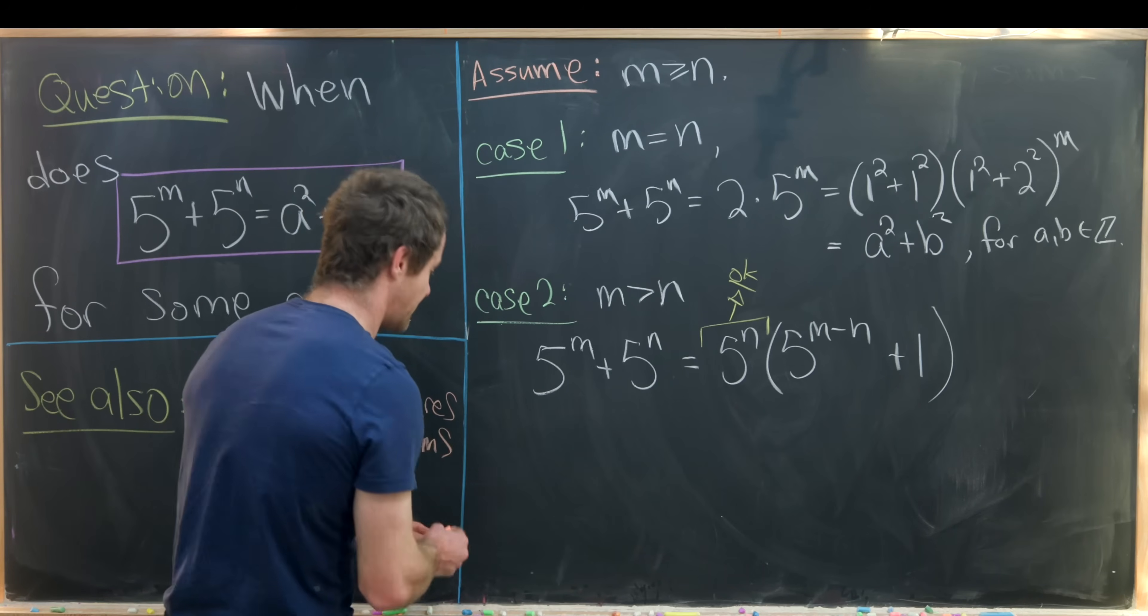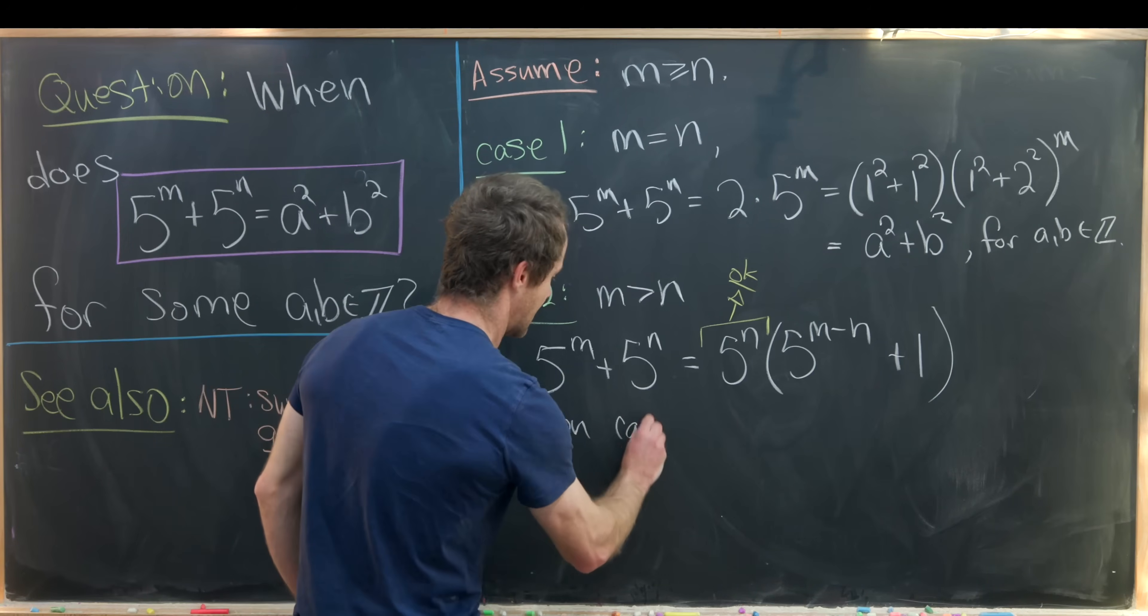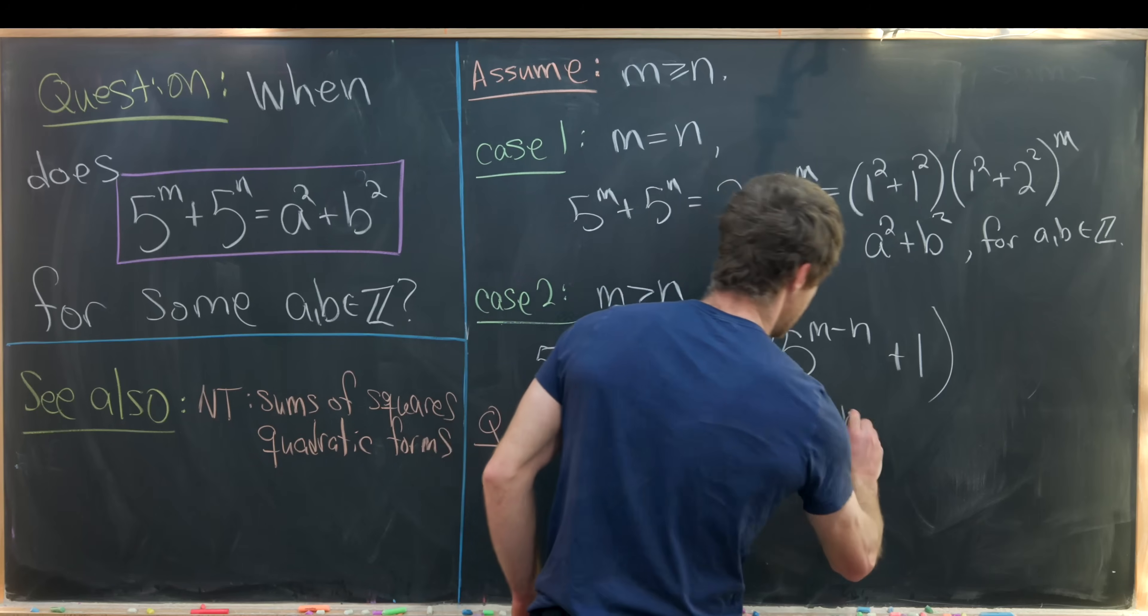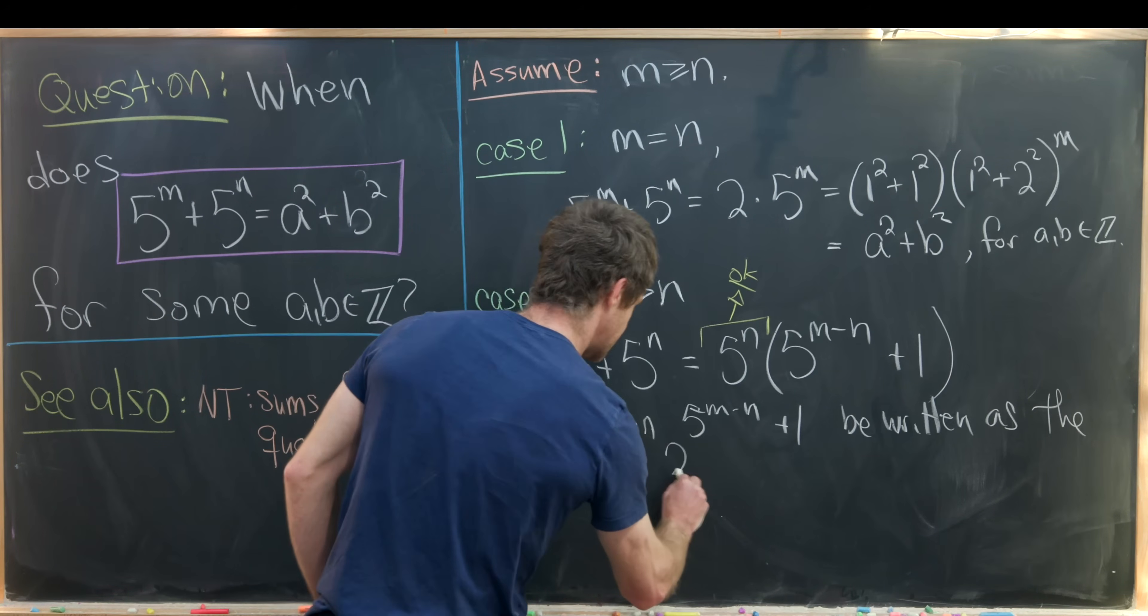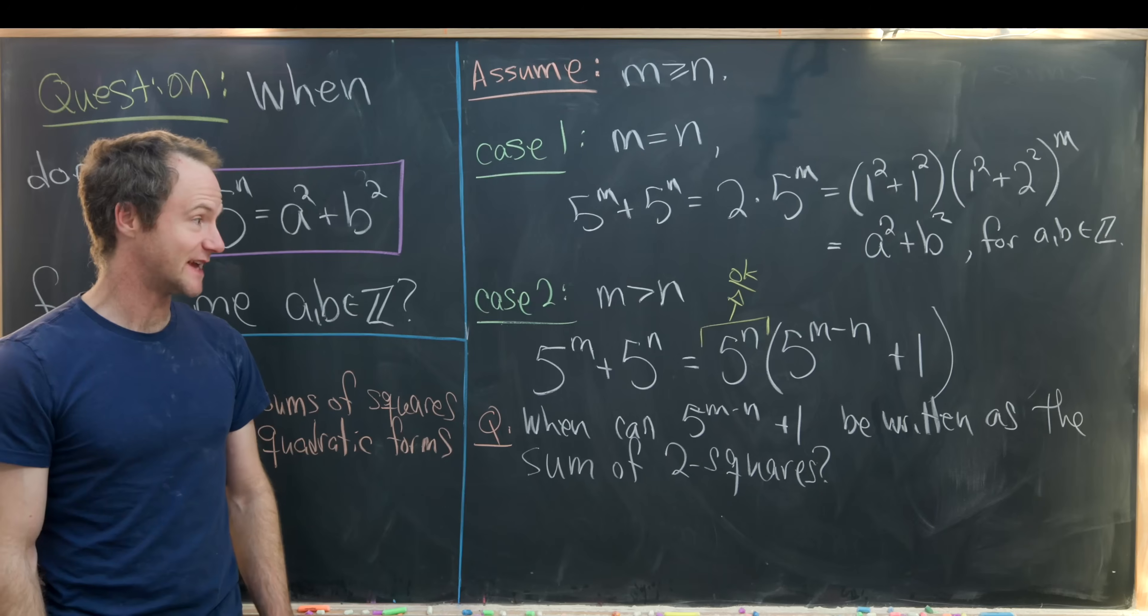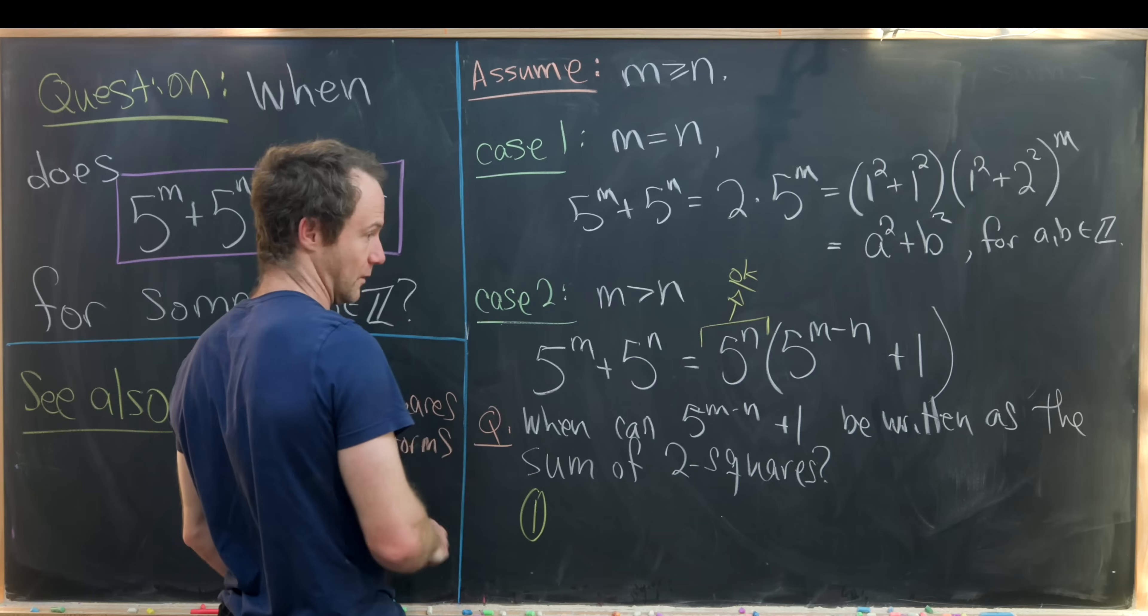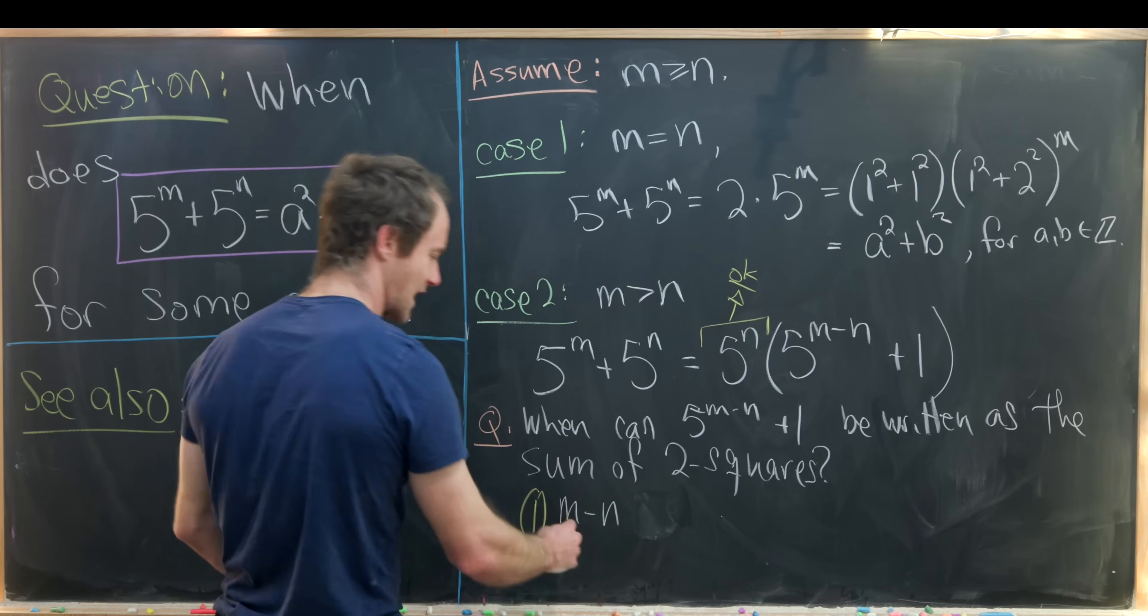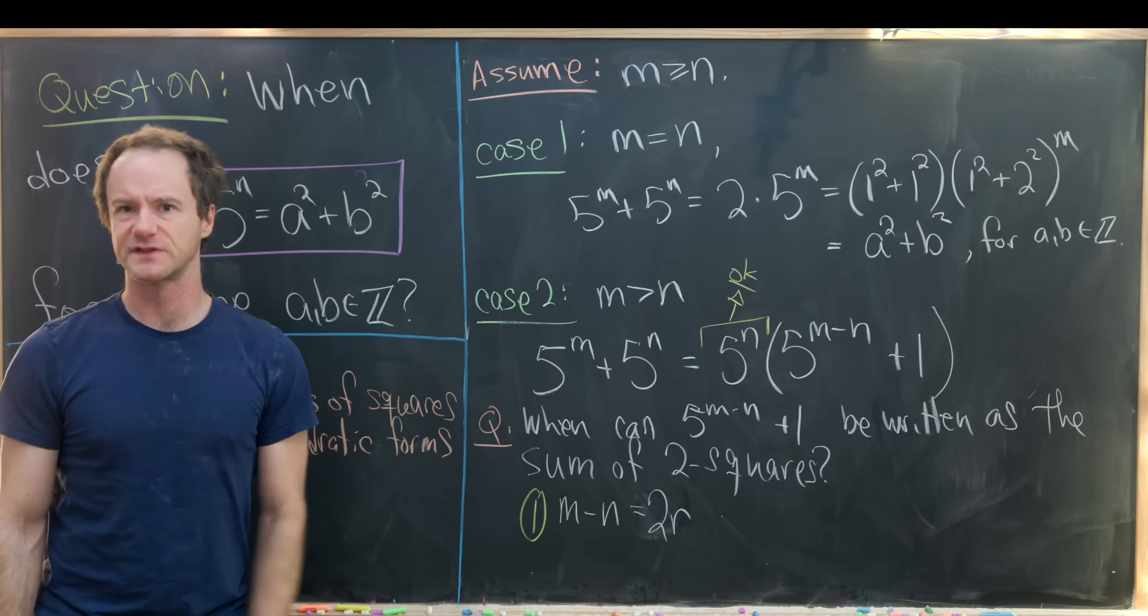So that brings us to the following question which we'll finish it all off: when can 5 to the m minus n plus 1 be written as the sum of two squares? Well I'm going to break this down into two cases as well. So my first sub case here will be if m minus n is even.